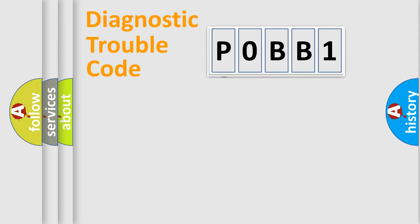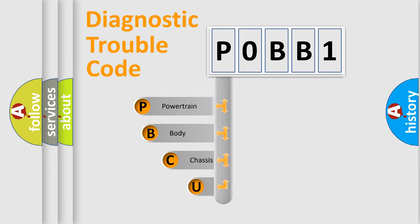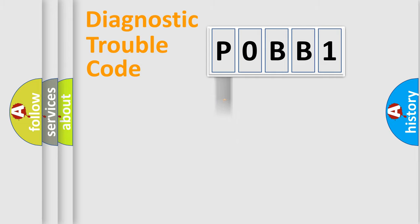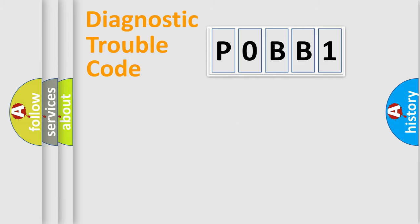First, let's look at the history of diagnostic fault code composition according to the OBD-2 protocol, which is unified for all automakers since 2000. We divide the electric system of an automobile into four basic units: Powertrain, Body, Chassis, and Network. This distribution is defined in the first character of the code.